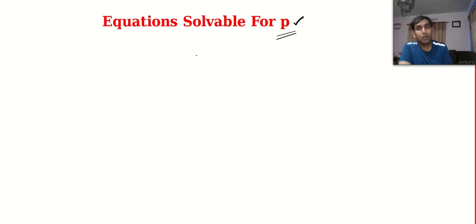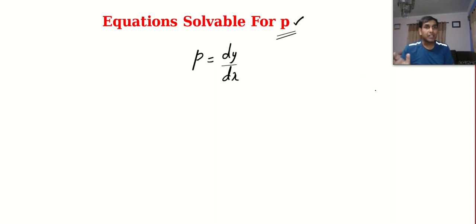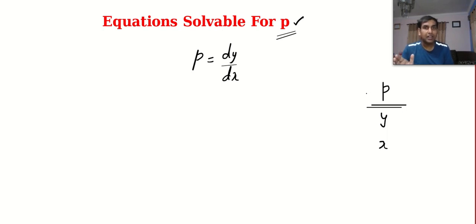Point number one: you should be 100% aware that P stands for dy by dx. So there are three types actually — equations solvable for P, equations solvable for Y, and equations solvable for X. In this video, we will learn how to deal when we are able to solve for P. And remember, P stands for dy by dx.